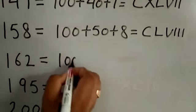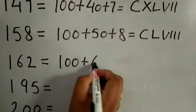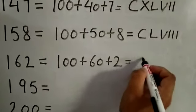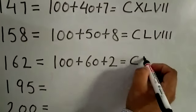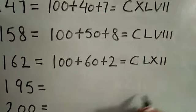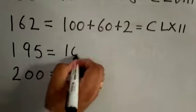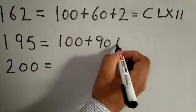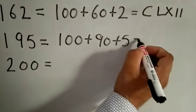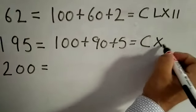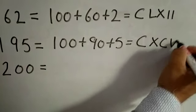162: 100 plus 60 plus 2. 100 is C, 60 is LX, 2 is II. 195: 100 plus 90 plus 5. C, 90 is XC, 5 is V.